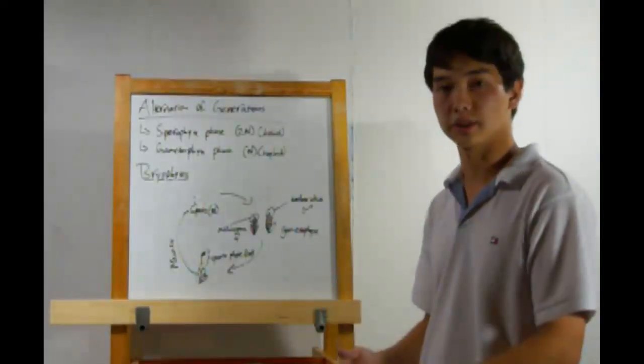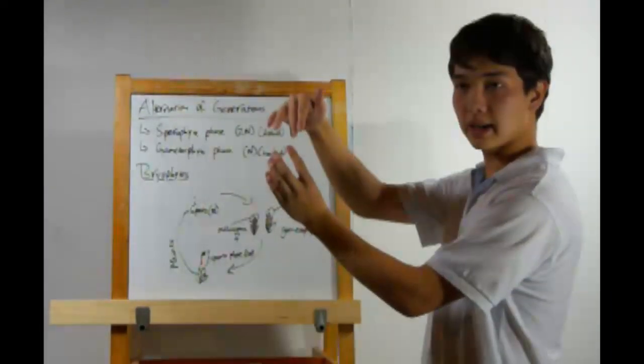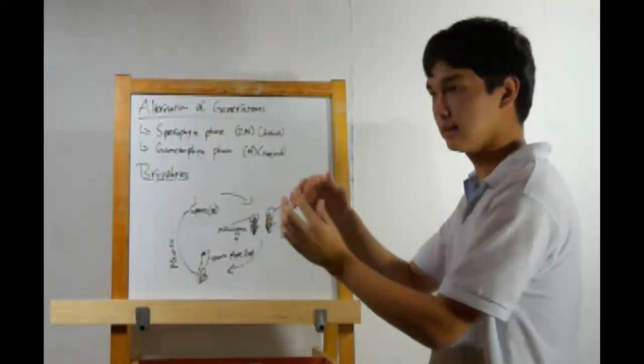The female will have a structure known as an archegonium. The sperm will then enter the archegonium and fertilize the egg cell within.